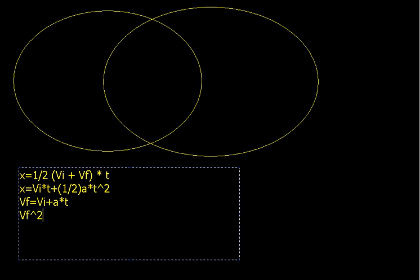And then we had this last one that was kind of ugly — it wasn't too obvious where it came from. We showed where it came from, but the important thing is that you know it even if you don't quite understand this particular one. Each of these equations has four variables, and if we have any three, we can solve for the others using basic algebra.